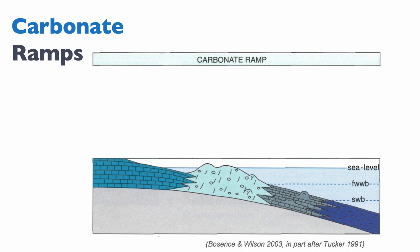So what's the barrier to the energy of waves? It's the shoal. Waves come and crash on the shoal. That shoal is typically sandy — it can be skeletal sand or it can be ooid sand. It doesn't really matter; it's one or the other. But typically you have shoals that form the barrier to energy, and the shoal is what allows us to distinguish between different parts of a carbonate ramp.